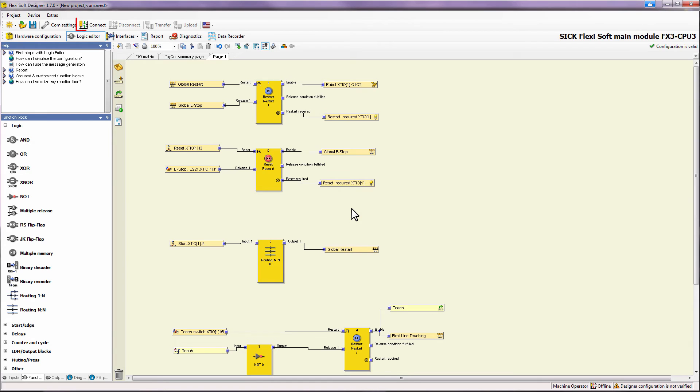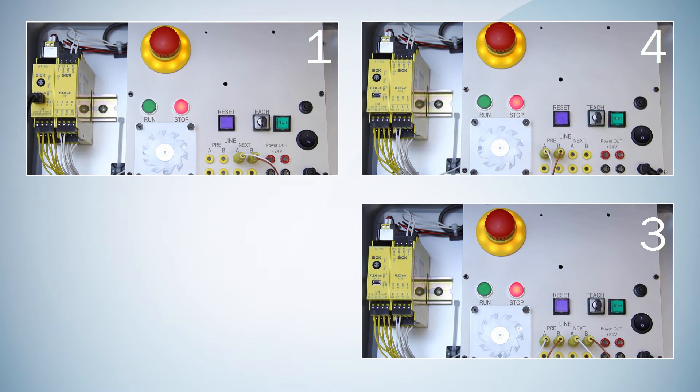The last step is simply to transfer the new configuration to the FlexiSoft station. Now we see the FlexiLine system again which is still in the teach required status. In between I have transferred the new configuration to the first station. From this station we can now perform the teach. So let's do it.